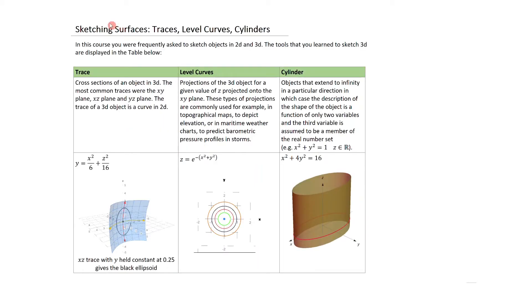One of the things we learned in this course was how to sketch objects in 2D and 3D. The tools for 3D sketching are traces, level curves, and cylinders. A trace is a cross section of an object in 3D. The most common traces were the XY, XZ, and YZ planes. The trace of a 3D object is generally a curve in 2D, or it could be a point.